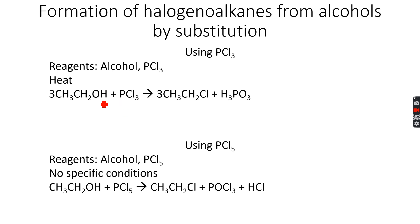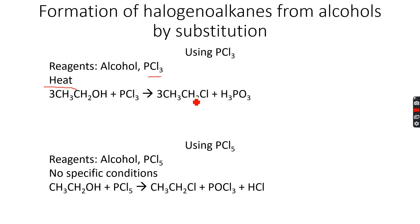If we are making the chloroalkane, the reagents you need are alcohol and PCl3. The condition is heat — with PCl3, you will always have to heat. When you react the alcohol with PCl3, you will get the haloalkane, which is chloroethane in this case. You also get H3PO3 as a product, so you should remember the products.